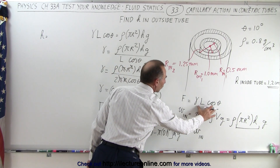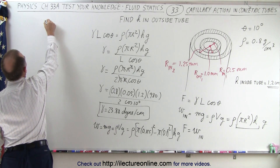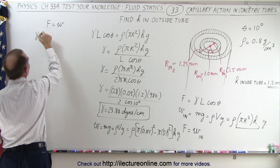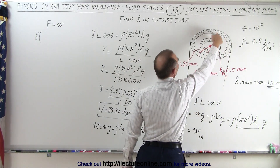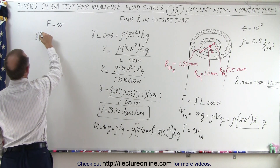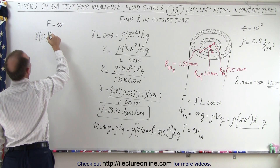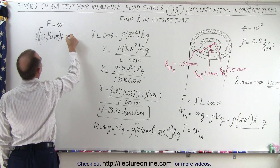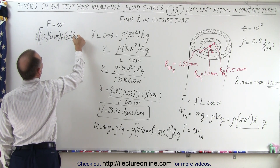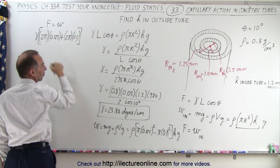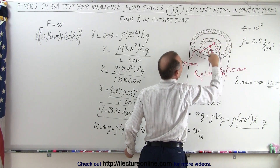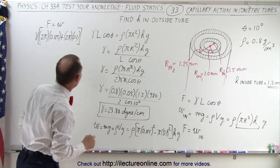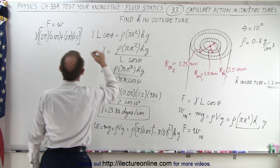We set force equal to weight. The force is surface tension times the contact length. The contact length now includes both the outer circumference and the inner circumference: 2 pi times the outside radius 0.125, plus 2 pi times the inside radius 0.1. That is the total length of contact — both the outer and inner circumferences — multiplied by cosine of 10 degrees.